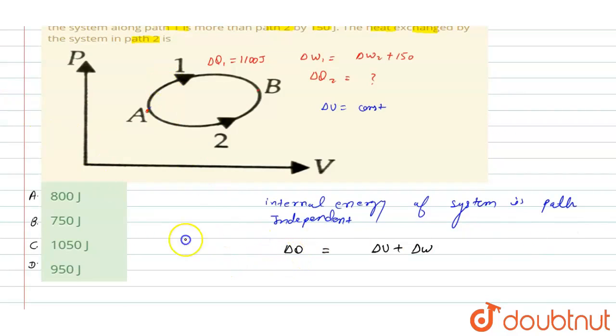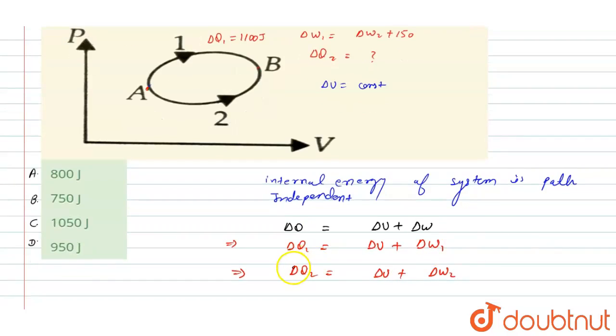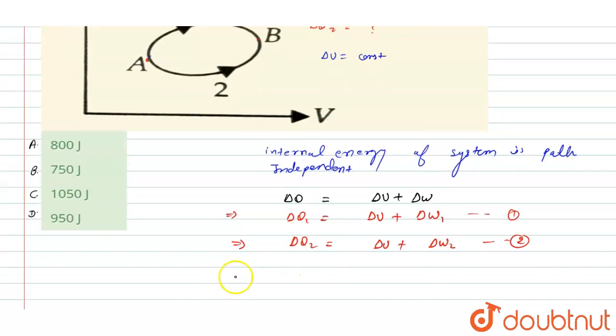Similarly for path 2, del Q2 is equal to del U plus del W2. Del Q2 we have to calculate, so we can subtract both equations. We can write here that del Q1 minus del Q2 is equal to del U minus del U cancels out to 0, plus del W1 minus del W2.